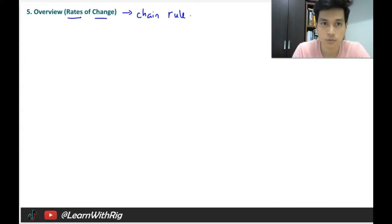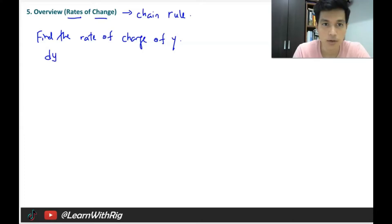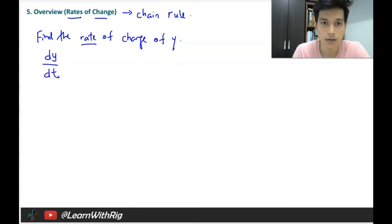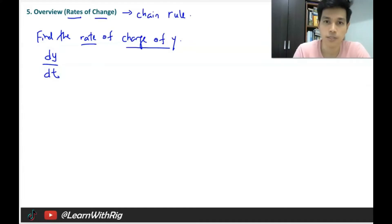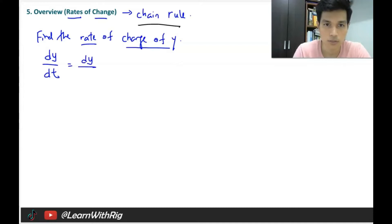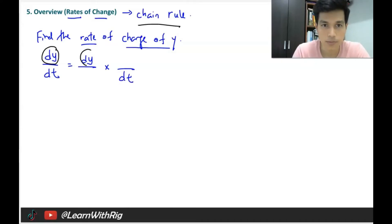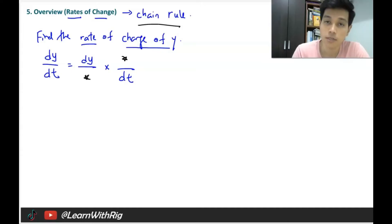For example, a question can ask you to find the rate of change of y. That means they want you to find dy/dt, because rate means time — how fast something changes. So dy represents the change of y, and dt represents time. To find dy/dt, you use chain rule: dy/dt equals dy/something times something/dt.